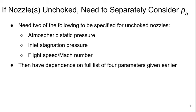If the nozzles are un-choked, then we separately need to consider the atmospheric pressure PA. Basically we need to know two of the three following things if we're dealing with an un-choked nozzle: we need to know the static pressure in the atmosphere, we need to know the inlet stagnation pressure, and the flight speed or Mach number. Two of those three is sufficient. And then we have the dependence of the engine parameters on the full list of four things that we gave earlier.